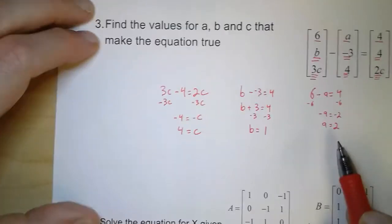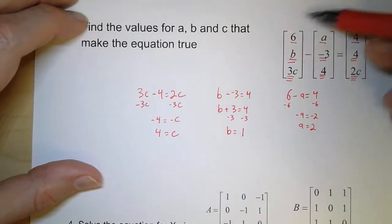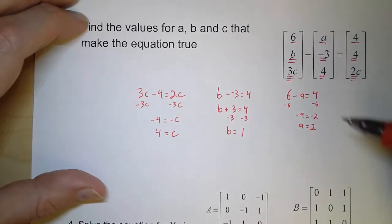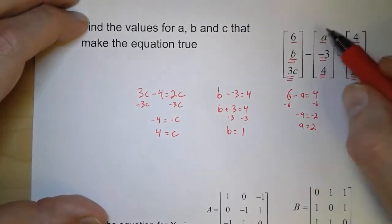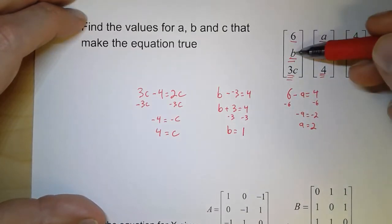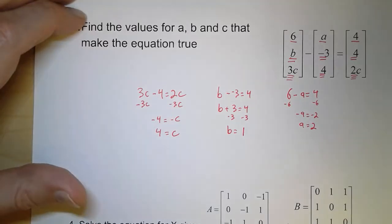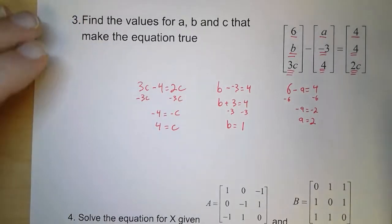So a value of a of 2, b of 1, and c of 4 is what makes this matrix correct. And so one single equation with matrices, because that's all this is, we're subtracting two matrices to get a third matrix, actually represents three different equations all at once. And that's the power of matrices that we'll see in later videos. One matrix equation can represent multiple numerical equations.